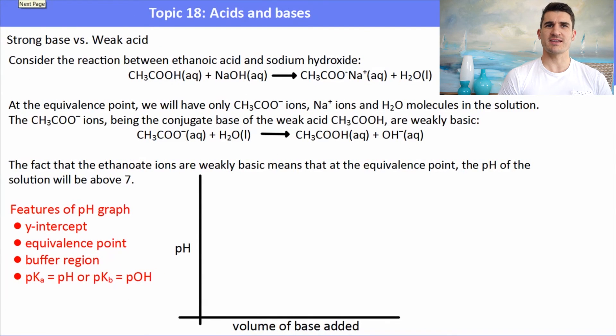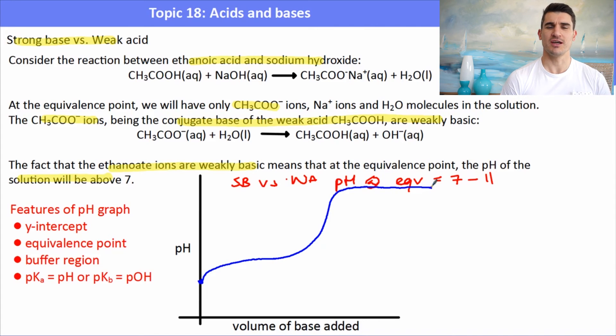If we have a strong base versus a weak acid, consider we have ethanoic acid versus sodium hydroxide. Then at the end of the reaction, we have some ethanoate ions in the solution. Those ethanoate ions are a weak base, so they could accept a proton, which means the equivalence point is going to be above 7. For a strong base versus a weak acid, we have an equivalence point somewhere between about 8 and 10, or 7 and 10, somewhere around there. We can draw the graph showing that our pH starts off a bit higher because we have a weak acid in the solution. Then as we add the base, our equivalence point is higher, again somewhere between 7 and 11, depending upon the compounds.